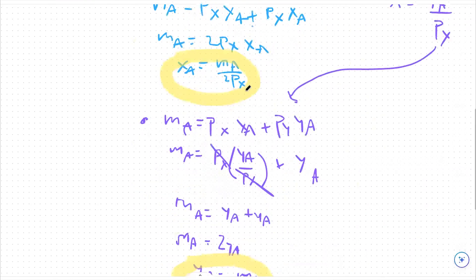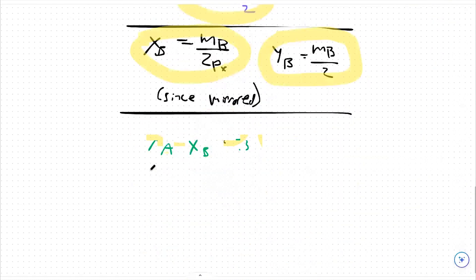From there, I can add my xA equation. I can say MA over 2px plus MB over 2px, adding in that equation for xB, all of that equals 30. That's also true.